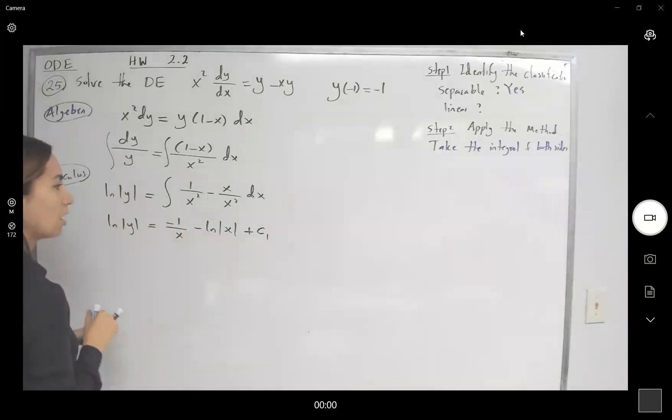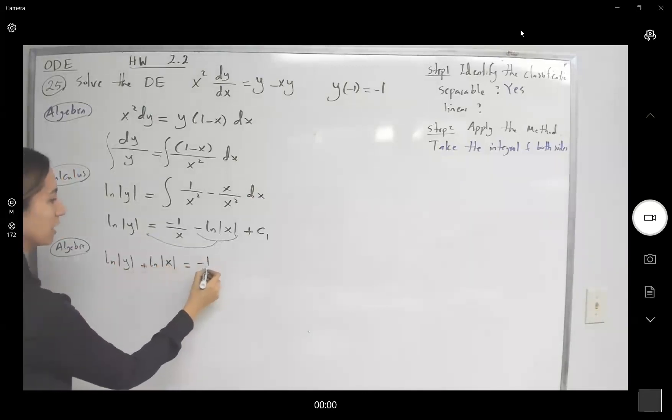Let us try to apply algebra. Simplify this as much as we can. So let us bring all ln to one side and apply the properties of ln. ln of absolute value of y plus ln of absolute value of x is equal to negative 1 over x plus c1.